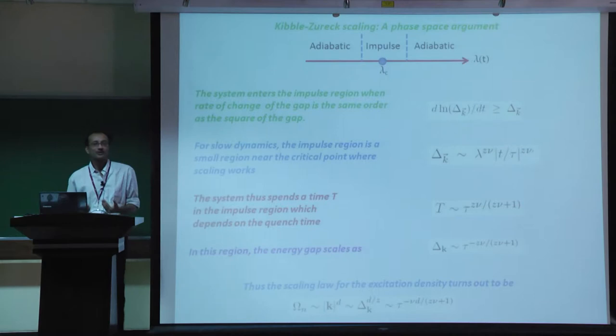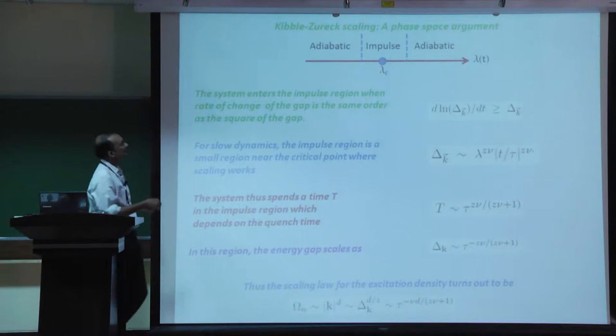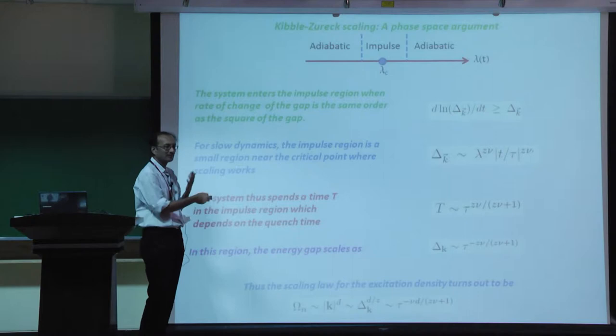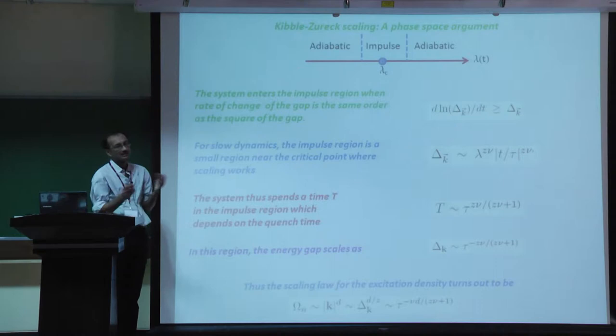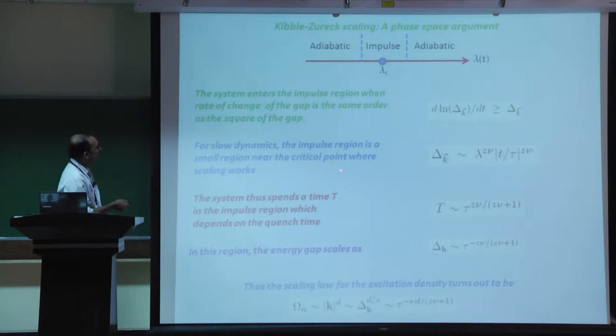Away from the critical point, where there is a large gap, the system is in the adiabatic regime on both sides, but in between there is an impulse regime. All excitation production takes place in this impulse regime. If driving slowly, this impulse regime coincides with the critical regime where scaling theory holds. The impulse regime is reached when the rate of change of the instantaneous energy gap is of the same order as the square of the gap - the Landau criterion for being non-adiabatic.